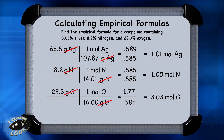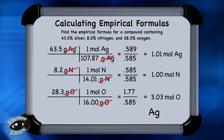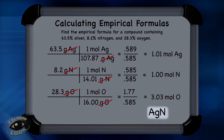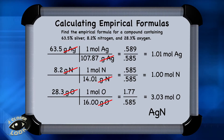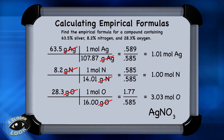Write the metal first, which is silver. Since the subscript is 1, write it as just Ag. Since nitrogen also has a subscript of 1, write N. Last is oxygen — since there are three oxygens based on the calculation, the subscript for oxygen is 3. The empirical formula for this compound is AgNO₃, and that's silver nitrate.